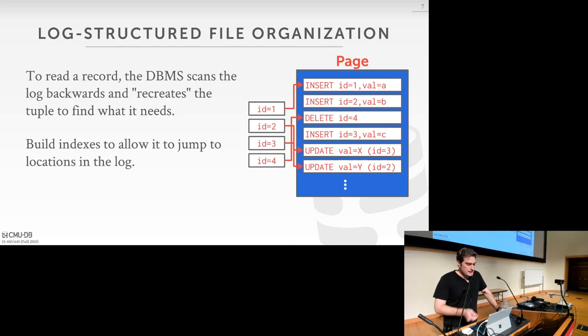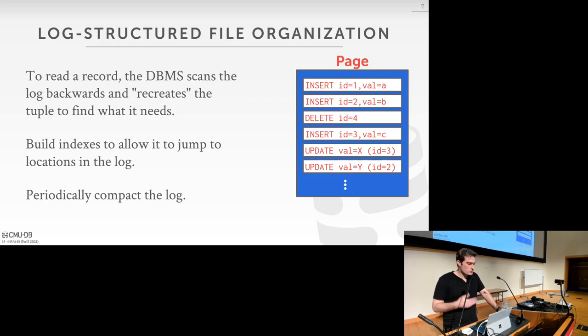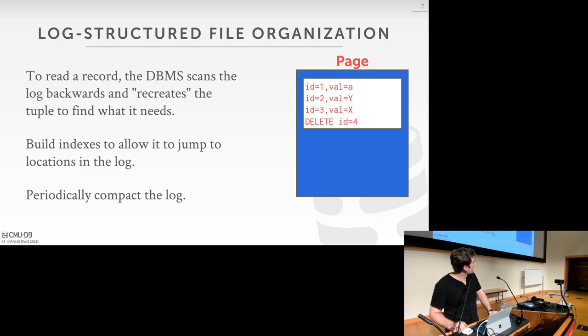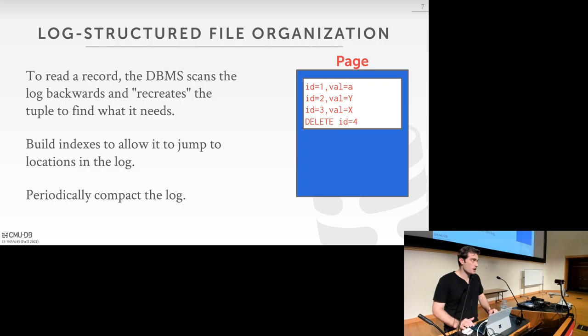You can build indexes to navigate log pages. Another option is to periodically compact the log. All these log records build up and need to be replayed to reconstruct individual tuples. If you perform a compaction, you squash down all the log records into single values, so you can just look up tuple ID 2 directly in the page. You perform this periodically — lock the page, do the compaction, release the lock.